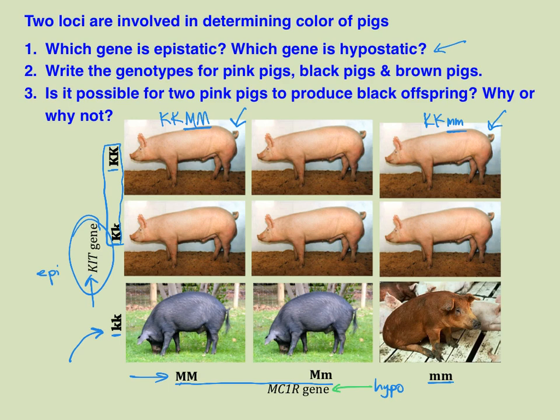Now that we've worked through that example, I'd like you to think about the genotypes for all nine pigs in this diagram. Then solve this problem: would it be possible for two pink pigs to produce a black offspring? Using what you know about genetics and regular inheritance, explain why that could or could not be possible.